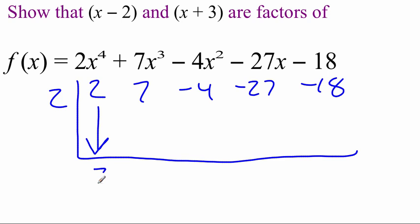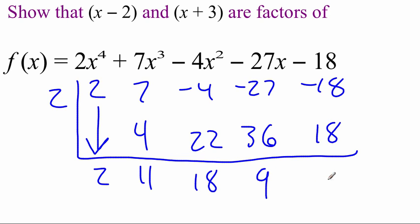Carry down that first number, so it's a 2. 2 times 2 is 4. Add those up, we get 11. 11 times 2 is 22. Add these up, we get 18. 18 times 2 is 36. Add these things up, we get 9. 9 times 2 is 18. Add these up, we get 0. Since we got a 0 remainder, we just showed that (x - 2) is indeed a factor. So that one worked out.